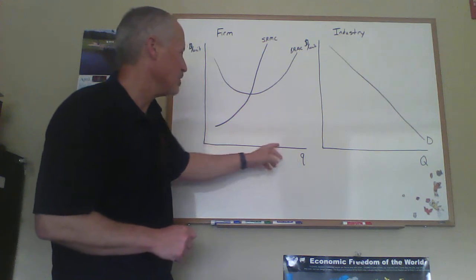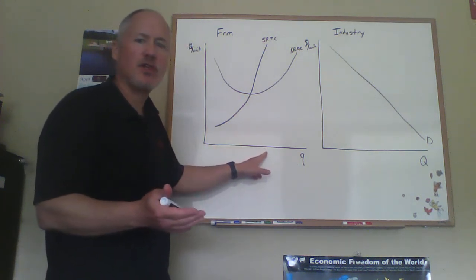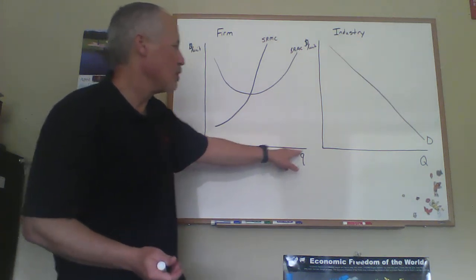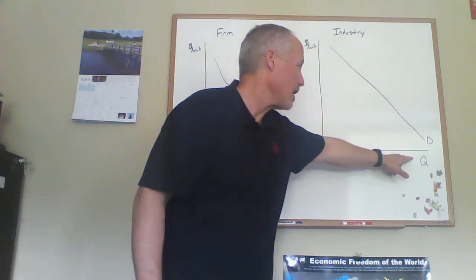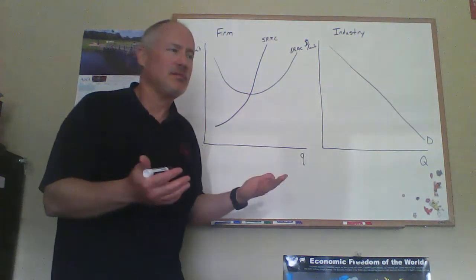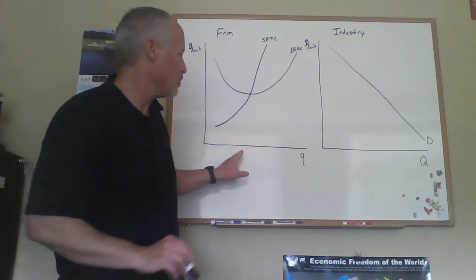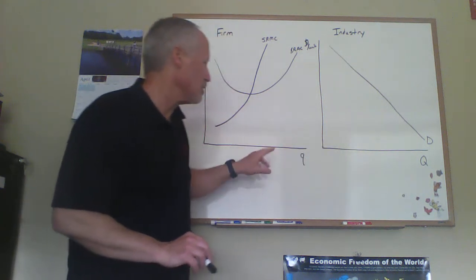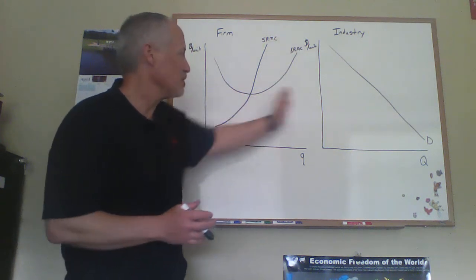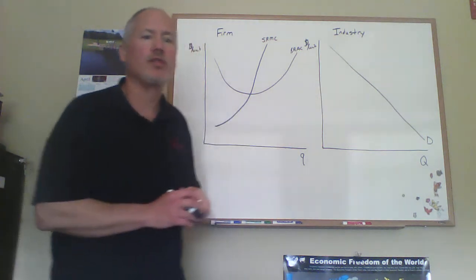I put a smaller number here just because this would be one firm — we might be thinking about like 50 firms in perfect competition. So these would be much smaller quantities than the quantity we have on the industry side. But they are the same units, so we can go from one diagram to the next in terms of quantities. The vertical axes are the same units, so we can take a price from one diagram directly over to the other.